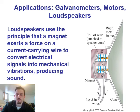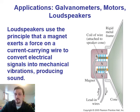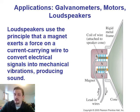Another use of magnetic forces is in loudspeakers. They use the principle that a magnet exerts a force on a current-carrying wire to convert electrical signals into mechanical vibrations that produce sound. Looking at the diagram, we have a lead-in wire carrying a current into a coil of wire attached to the speaker cone, all inside a magnet. Any current-carrying wire in a magnetic field experiences a force, so whenever you have current running through these wires, it creates a force and a mechanical vibration — and that's how we produce sound in a loudspeaker.